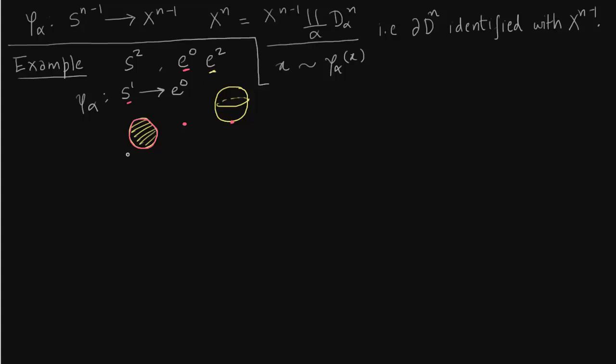Okay so we can generalize this construction to construct S^n. S^n consists of two cells e^0 and e^n. So x^(n-1) is always e^0.